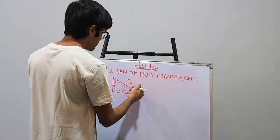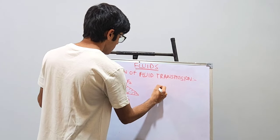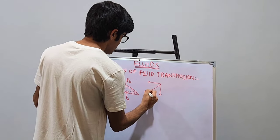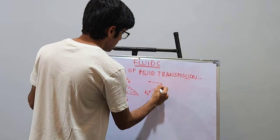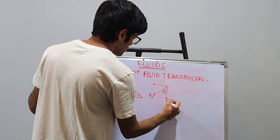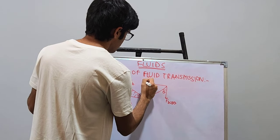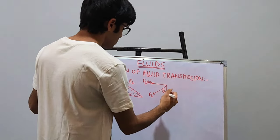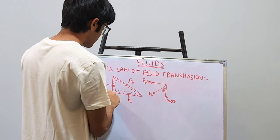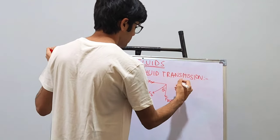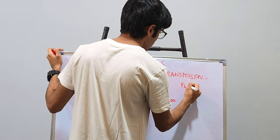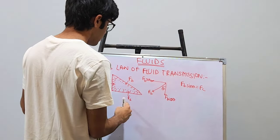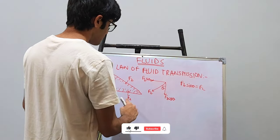So when we resolve its rectangular components, this right here is FB. It makes theta angle here. This is FB cos theta and this is FB sin theta. So FB sin theta is equal to FC — equal and opposite vectors — and similarly FB cos theta is equal to FA.